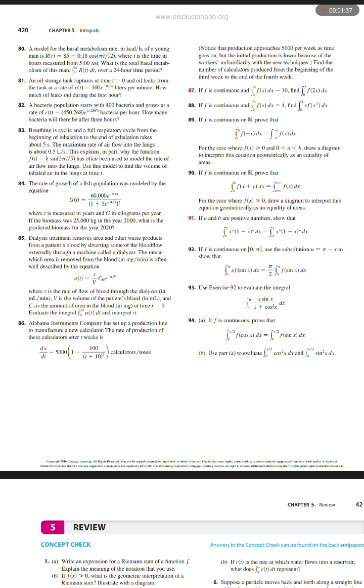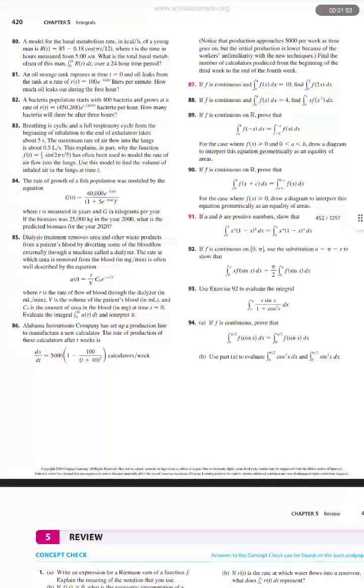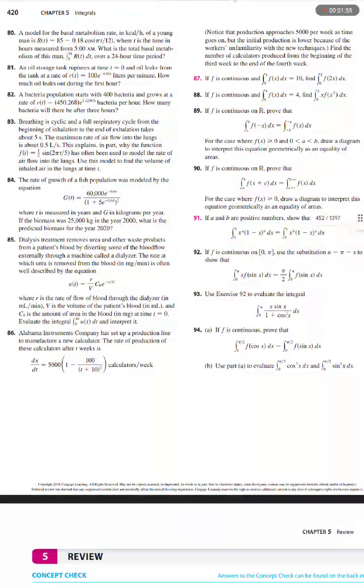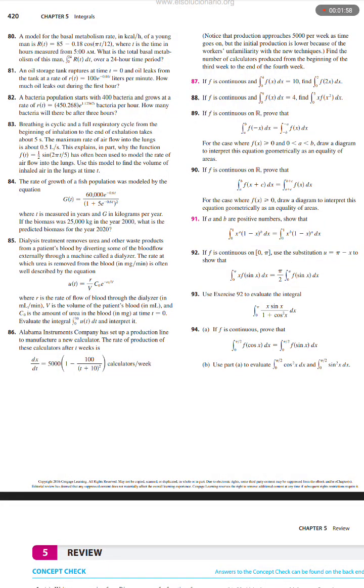An oil storage tank ruptures at time t equals 0 and oil leaks from the tank at a rate of r(t) equals 100 e to the power negative 0.1t liters per minute. How much oil leaks out during the first hour?